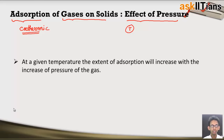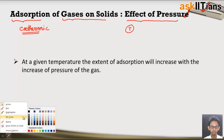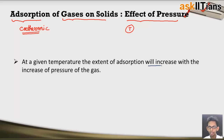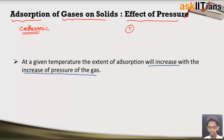So temperature must be constant whenever we are talking about the effect of pressure on adsorption of gases on solids. At a given temperature, the extent of adsorption will increase with increase in the pressure of the gas. Whenever we increase the pressure of gas, its rate of adsorption gets increased, so the extent of adsorption directly depends on pressure.